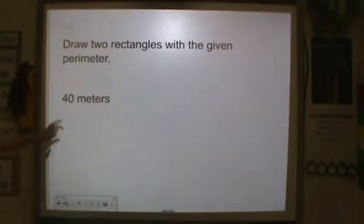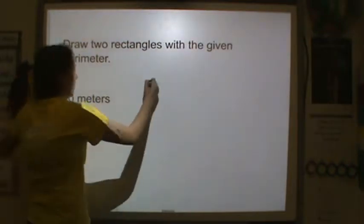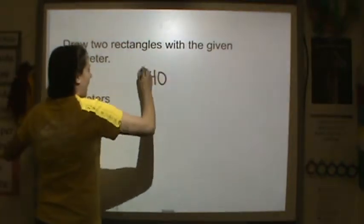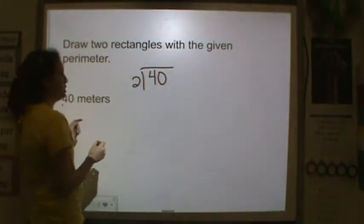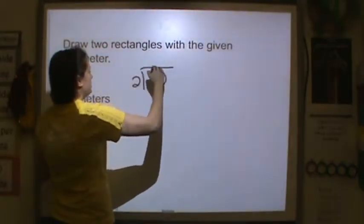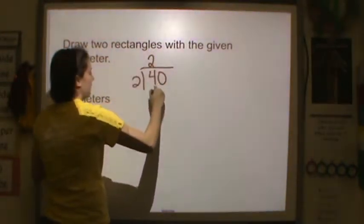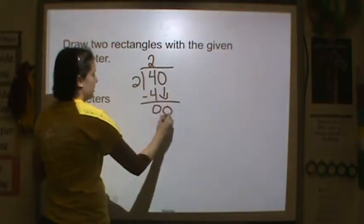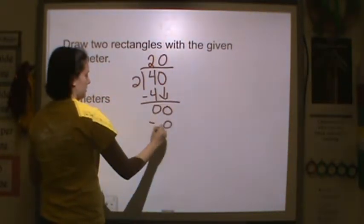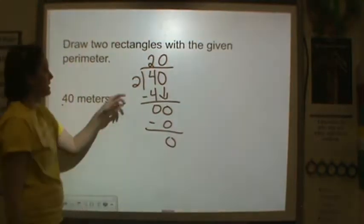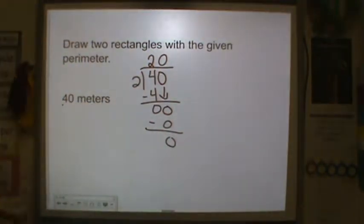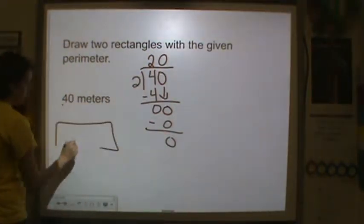So let's try another one. Let's use our steps we used earlier. Take half of the perimeter. Well, 40, half of that, or divide it by 2. Let's see how many 2's are in 4. 2, multiply, subtract, bring down, divide, multiply, subtract. So half of 40 is 20. So I need two numbers that add up to 20.